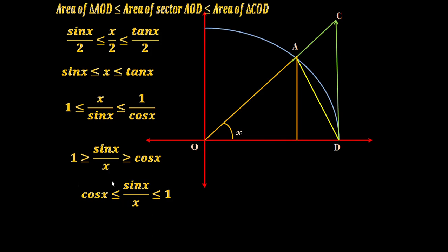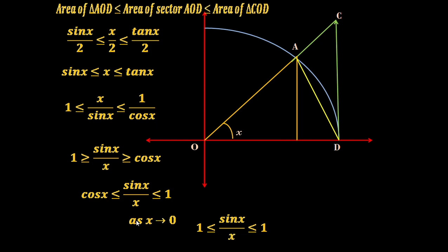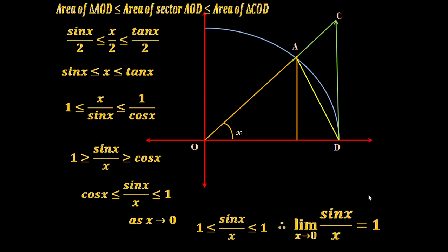Now as X tends to 0, we know cos(0) is 1. So as X tends to 0, this value becomes 1, and there is no effect on 1 because it is constant. Thus this inequality becomes 1 ≤ sin(X)/X ≤ 1 as X tends to 0. Therefore we can say limit X tends to 0 of sin(X)/X equals 1. This is a very important result we will use often while evaluating limits of various functions.